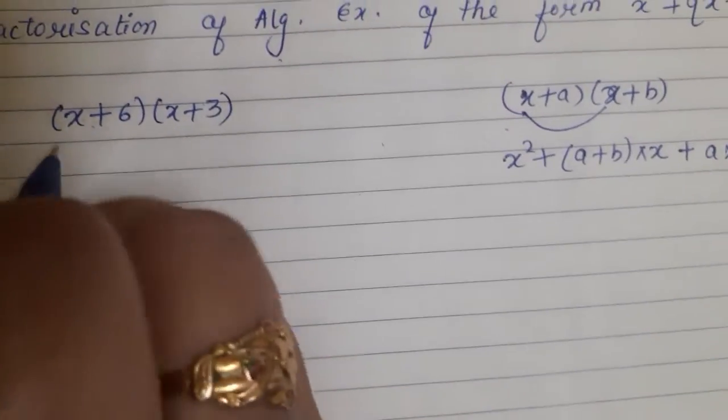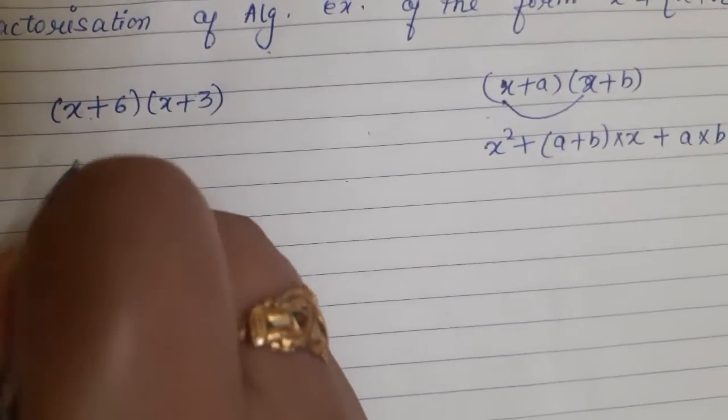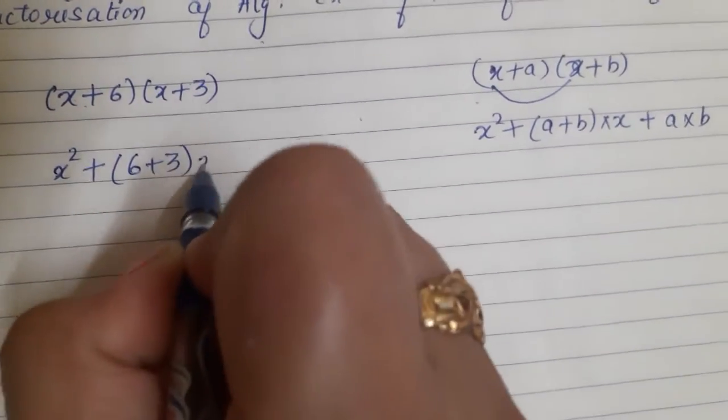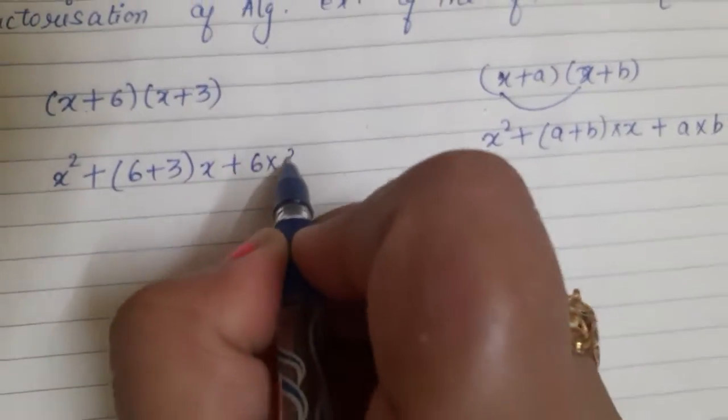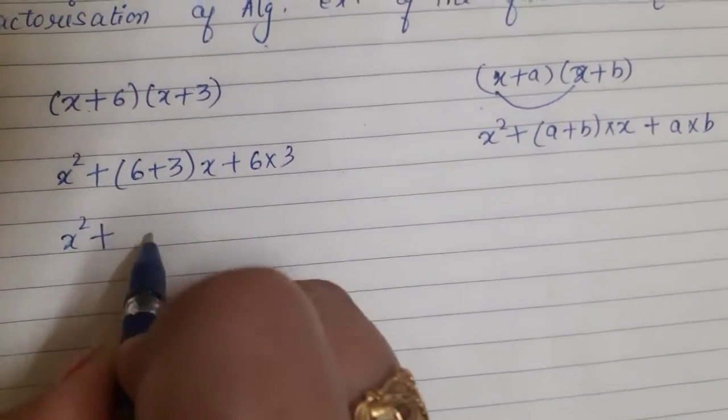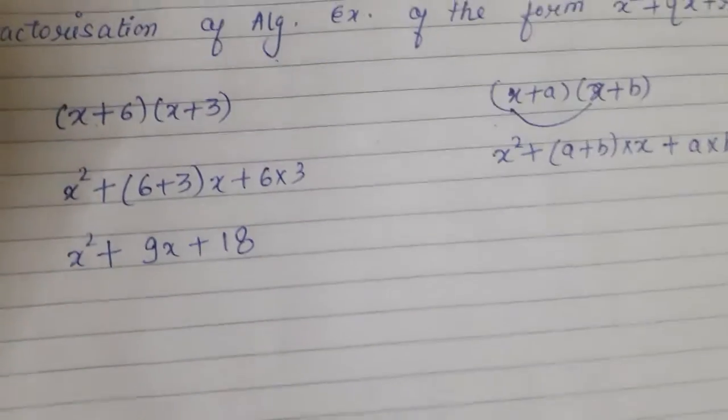Now, can we directly use the identity here? Yes, sure. x square, 6 plus 3 into x plus 6 into 3. And what the answer came? x square, 6 plus 3, 9x and 6 threes are 18.